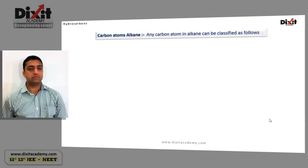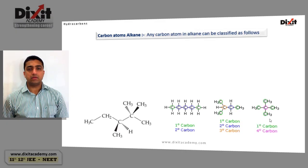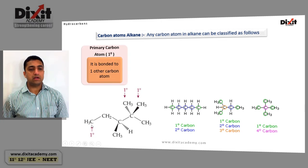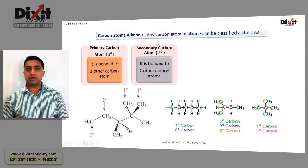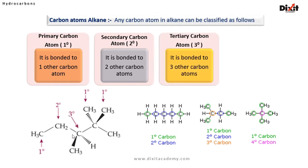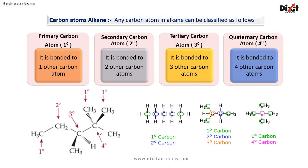Any carbon atom in an alkane can be classified as follows. A carbon atom bonded to only one other carbon atom is called a primary carbon atom. A carbon atom bonded to two other carbon atoms is called a secondary carbon atom. A carbon atom bonded to three other carbon atoms is called a tertiary carbon atom. A carbon atom bonded to four other carbon atoms is called a quaternary carbon atom.